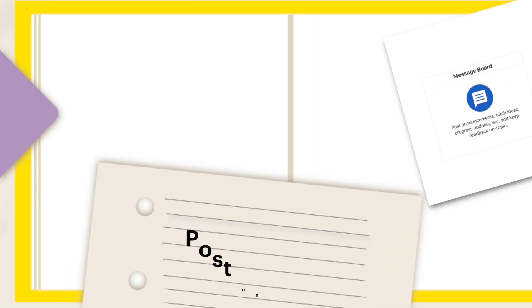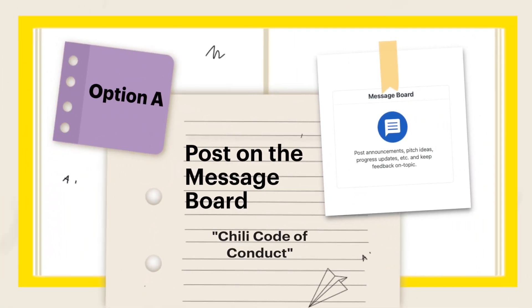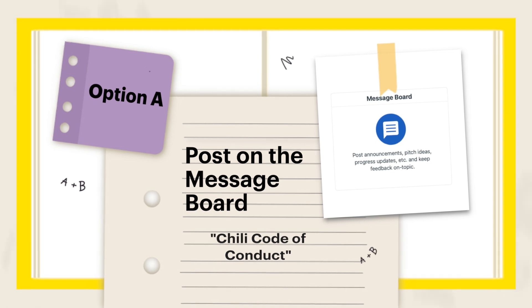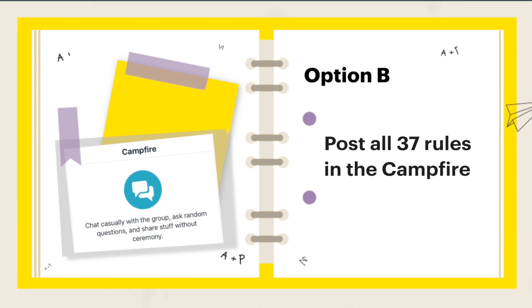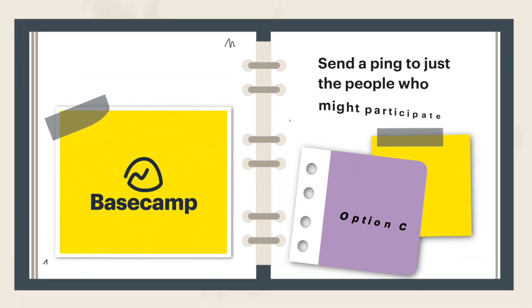Question three: it's time for the annual Basecamp Chili Cook-Off and I've started a Basecamp project for it and have included all the contestants. I need everyone to know the rules to this very competitive event. Should I A) post a message in the Chili Cook-Off project titled 'Chili Code of Conduct'? B) post in the campfire spelling out all 37 rules? Or C) send a group ping to just the eight people I'm pretty sure are going to participate? The answer is A — when you want everyone on a project to have access to communication and for it to be saved in a prominent place they can easily go back to, the message board is where you should post it.